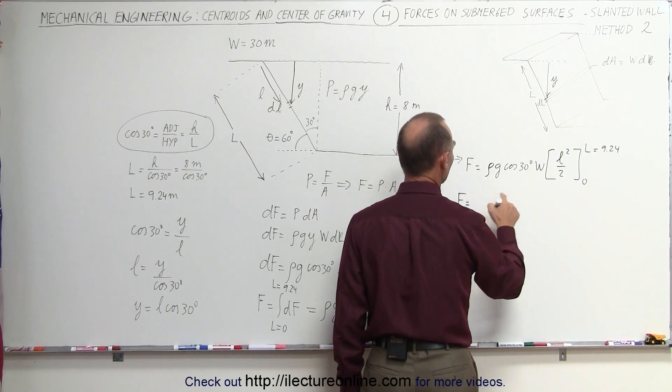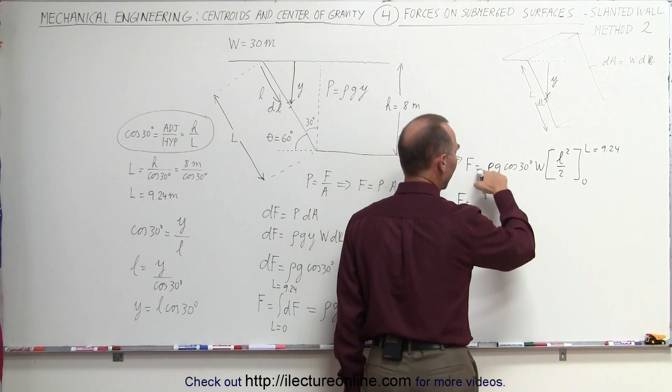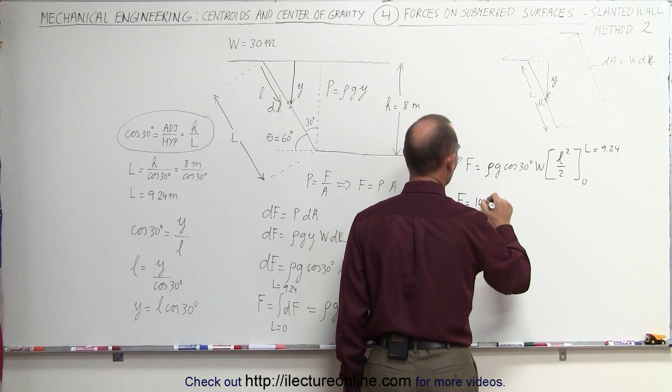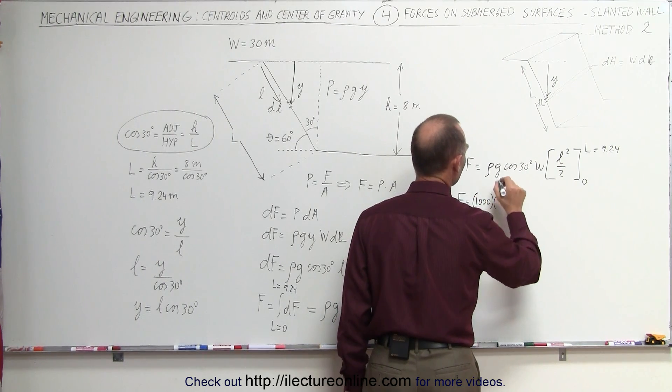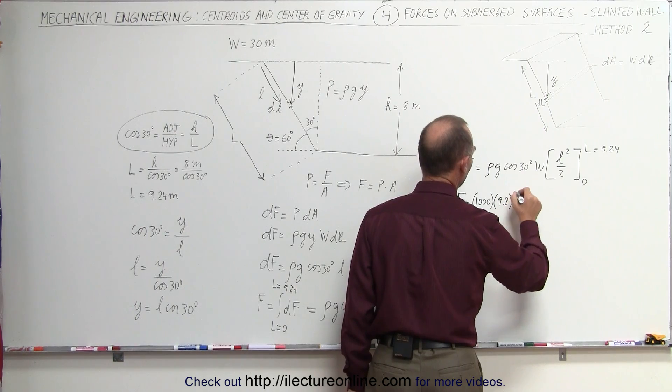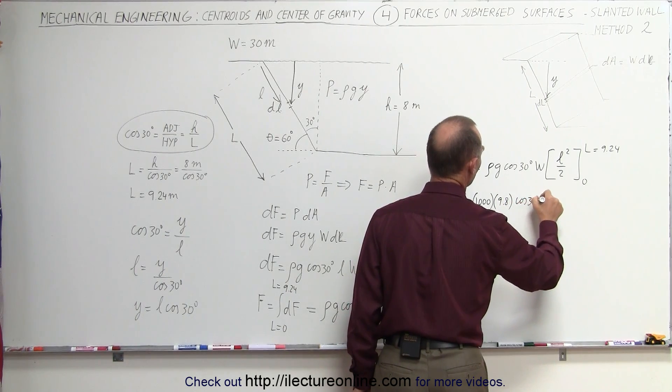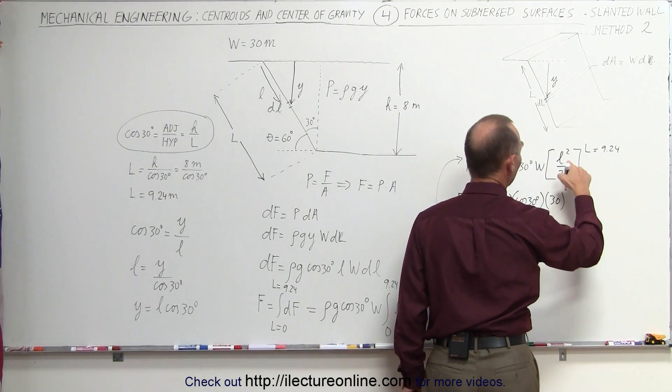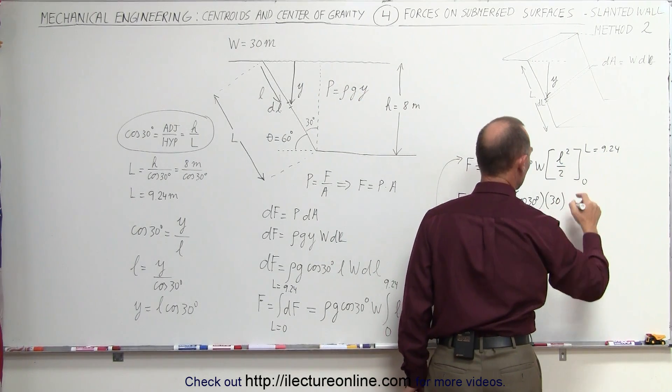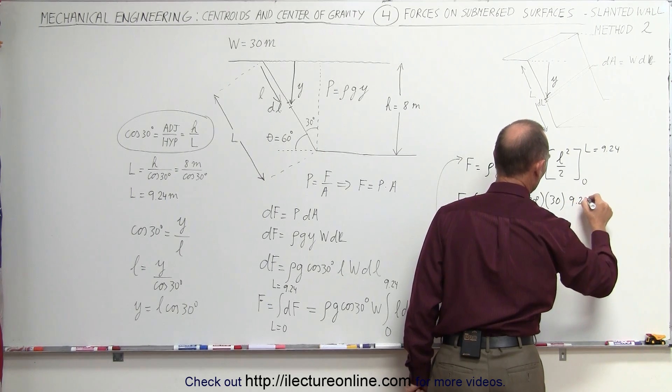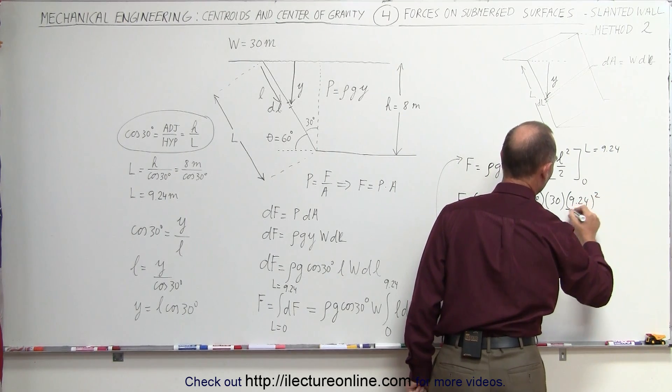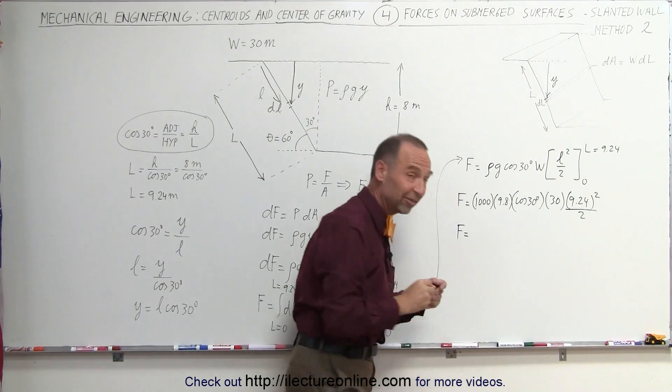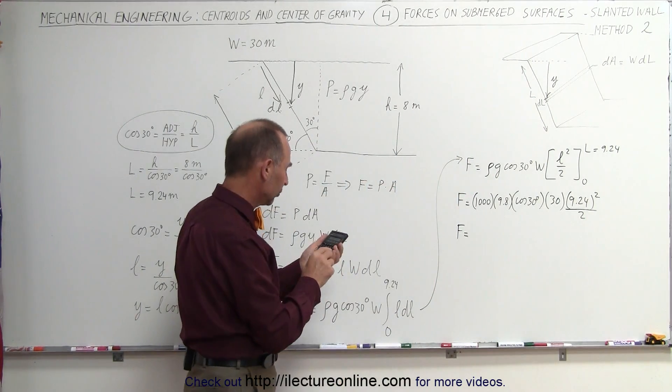The density of water is 1,000 kilograms per cubic meter, g is 9.8, the cosine of 30 degrees. The width of the dam we set was 30 meters, and now we have l squared, l being 9.24, 9.24 quantity squared divided by 2. And that should give us the total force on the slanted portion of the dam.